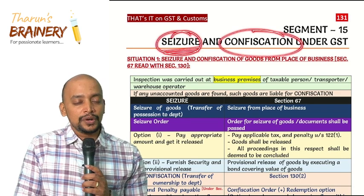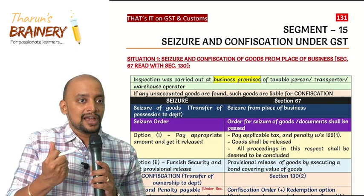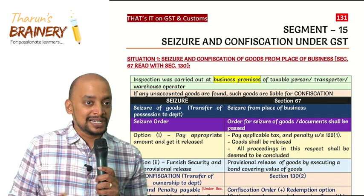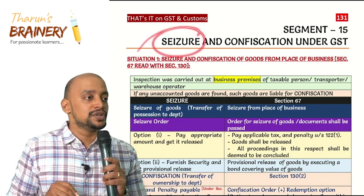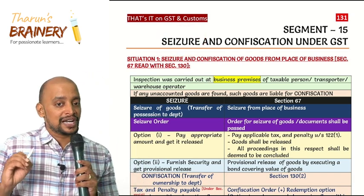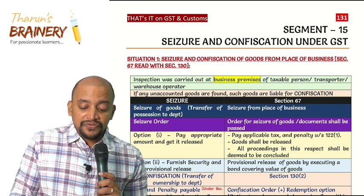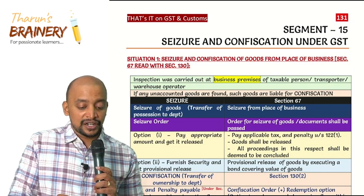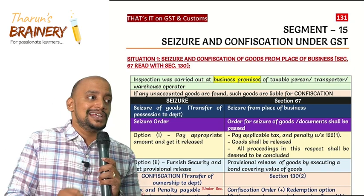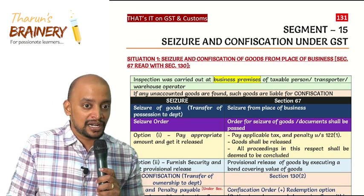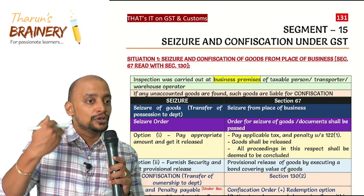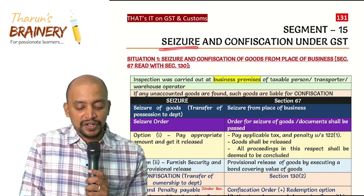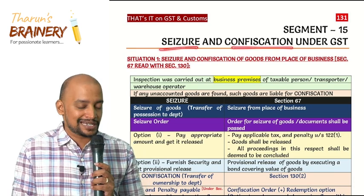Seizure refers to taking possession of the goods, but the ownership is still with the taxpayer. The department will take possession of the goods from the taxpayer — that is known as seizure. If a confiscation order is also passed, not only the possession but also the title is taken away by the department, and the department will sell those goods and will not pay any amount to the taxpayer. That is the difference between seizure and confiscation.